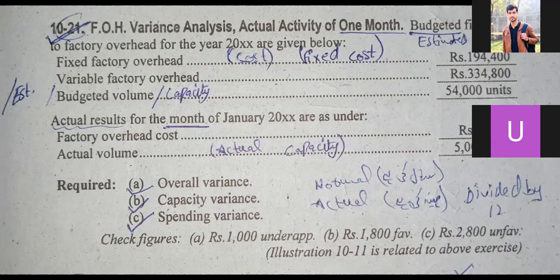The data that you have given — fixed FOH, variable FOH, and estimated or normal capacity — is yearly. The data such as FOH cost, which is your actual FOH, and actual capacity, is for one month. So first of all, you have to convert your yearly costs into months. After converting, you have to solve the overall variance, capacity variance, and spending variance.